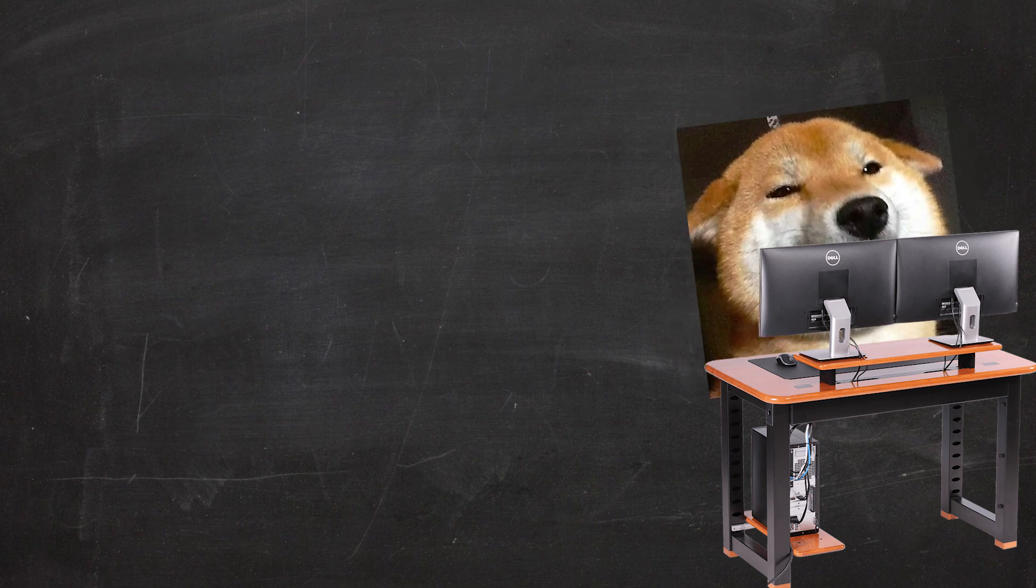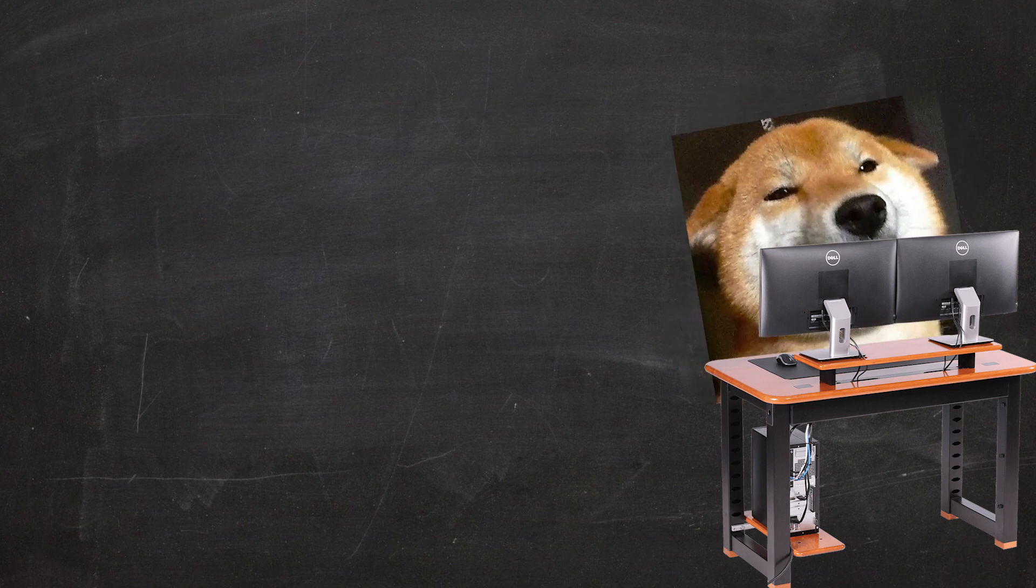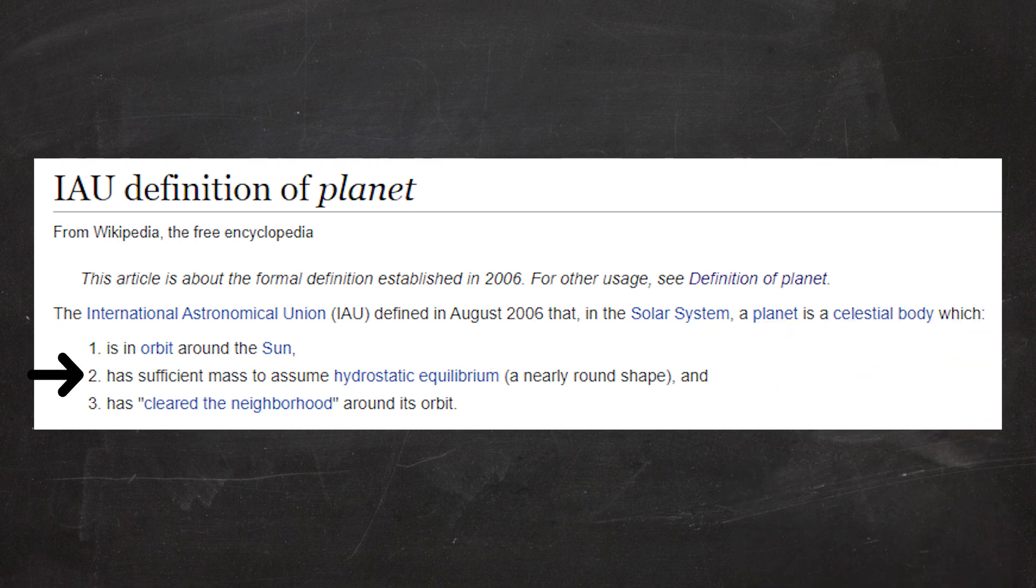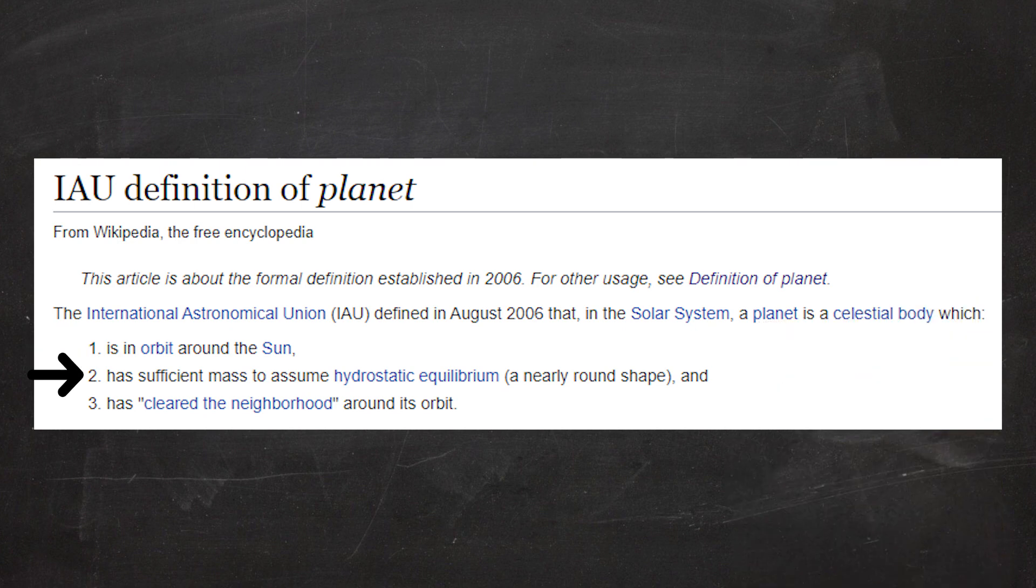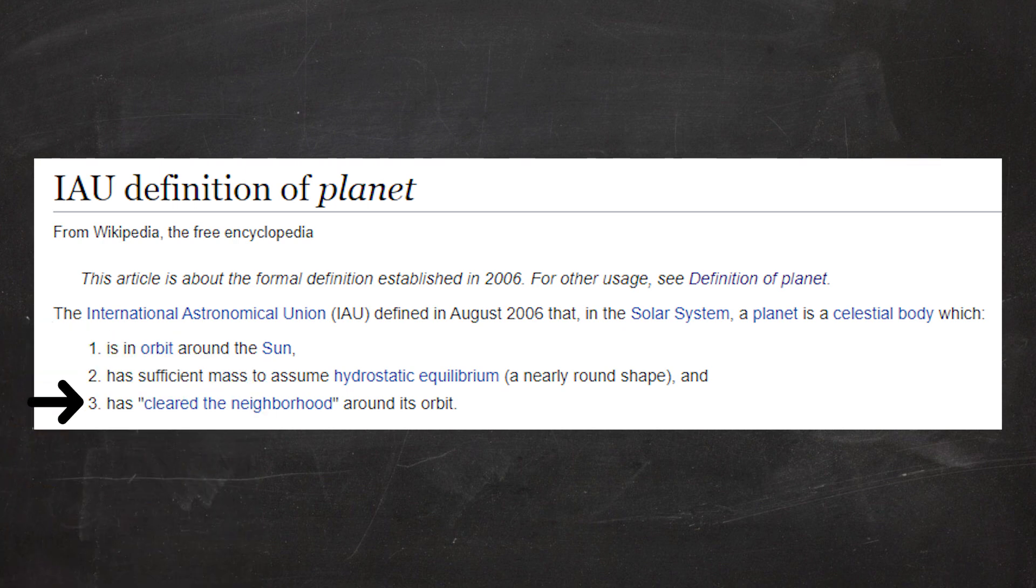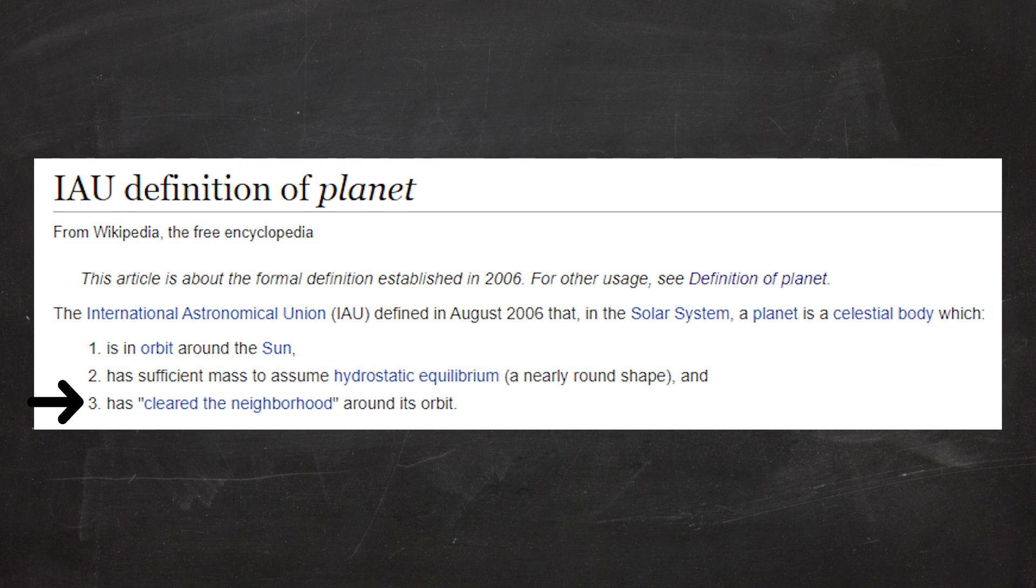Yes, we can! According to the definition of a planet made by the International Astronomical Union, the established definition is 1) the object is in orbit around its star, which these planets are. 2) it has a sufficient mass to assume hydrostatic equilibrium, which means it has a nearly round shape, which these planets do have. And 3) it has cleared the neighborhood around its orbit, which means it has nothing to collide into as it orbits around its parent star, which these planets, once again, do have. So yes, they are planets.